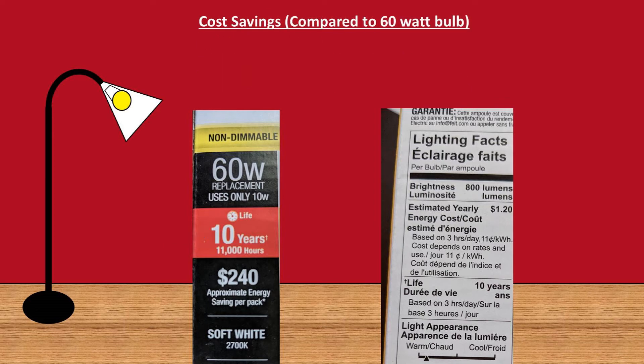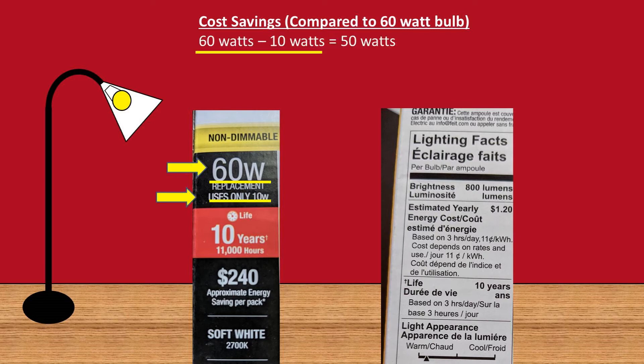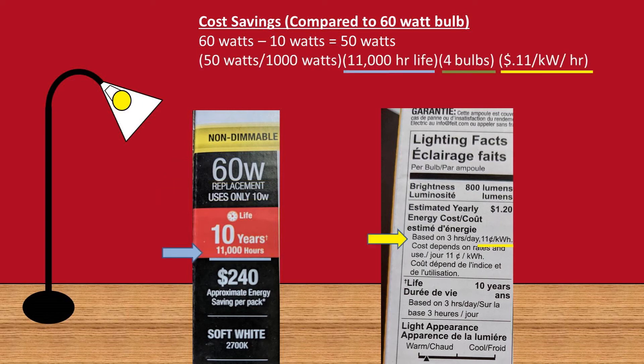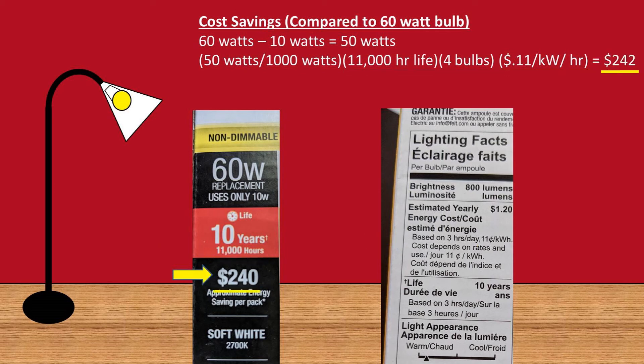To finish off this video, we are going to find the cost savings compared to a 60 watt equivalent light bulb. First, we need to find the difference from 60 watts to 10 watts, which is 50 watts. Next we can take 50 watts divided by 1,000 watts to get kilowatt hours, then multiply that times the 11,000 hour life of each bulb. We have 4 bulbs in a package, so we can multiply this times 4, then multiply this times 11 cents per kilowatt hour, and we get an estimated savings of $242 per box of 4 bulbs.